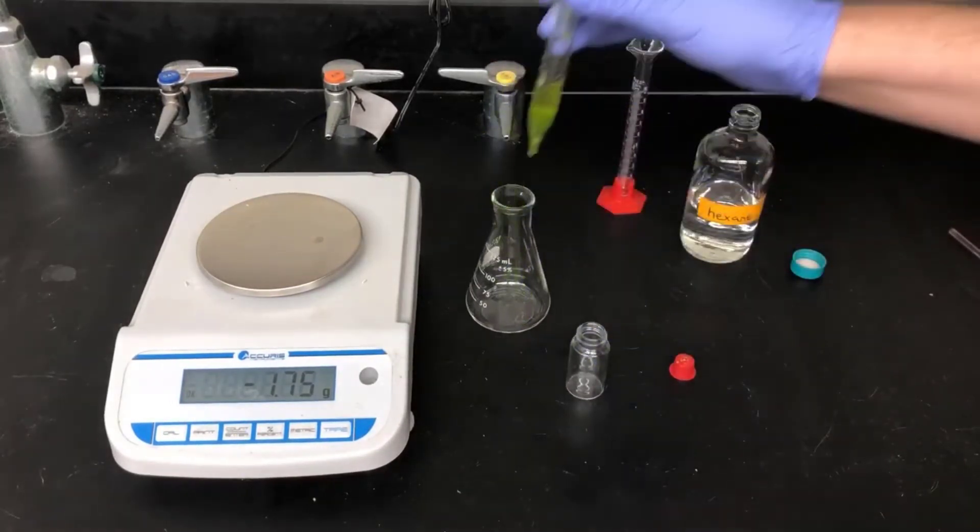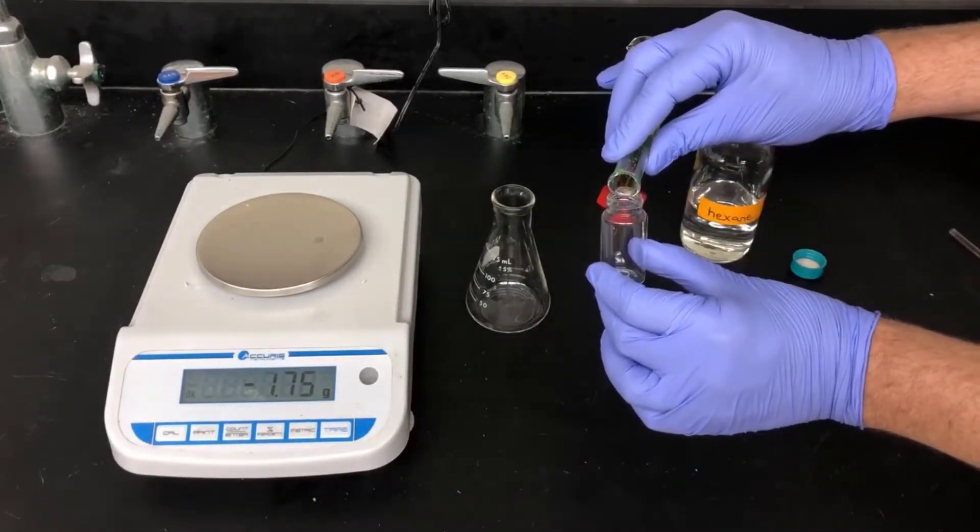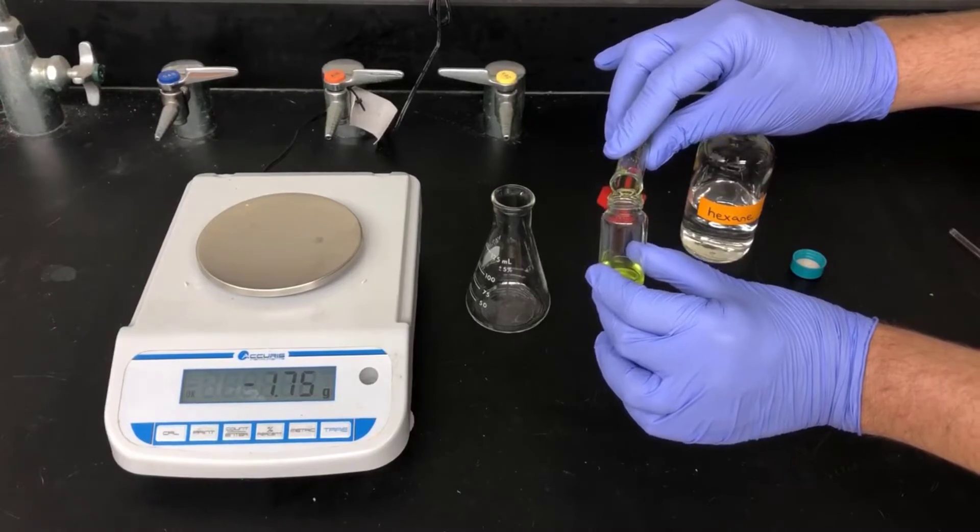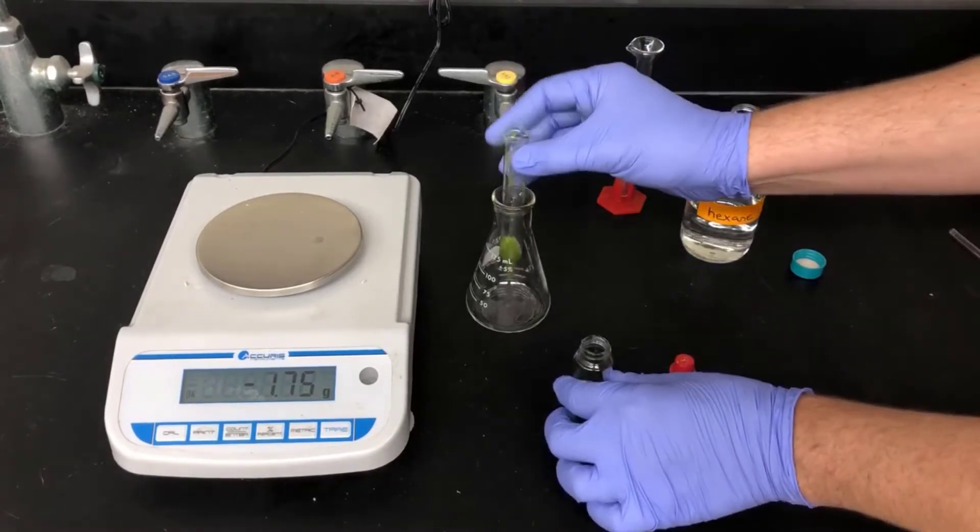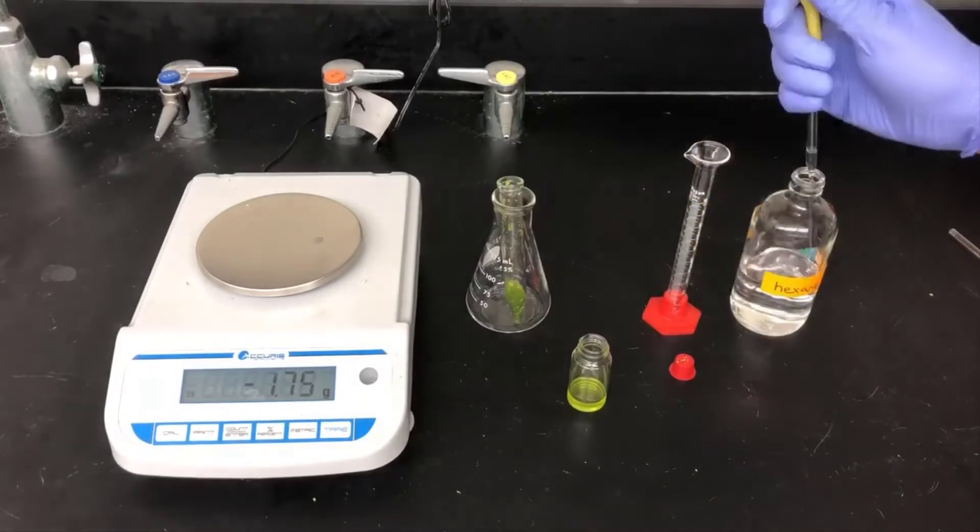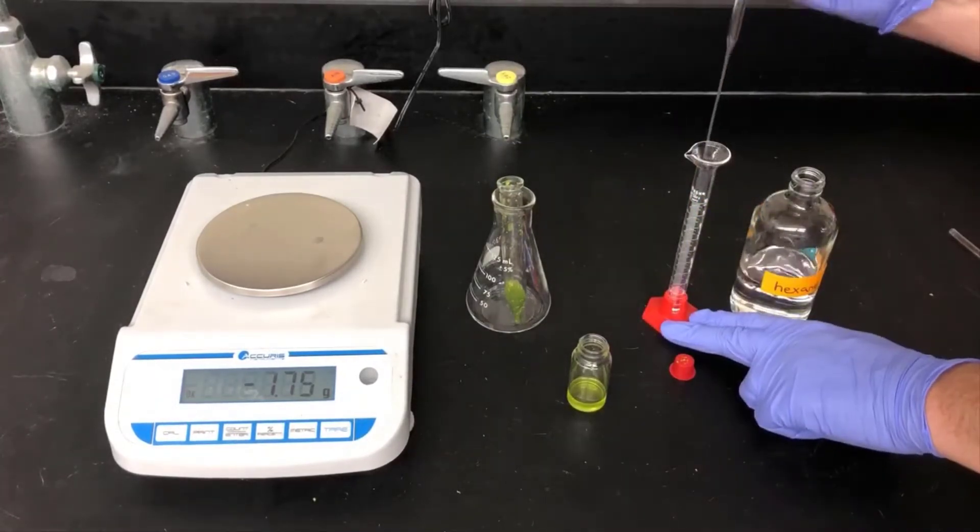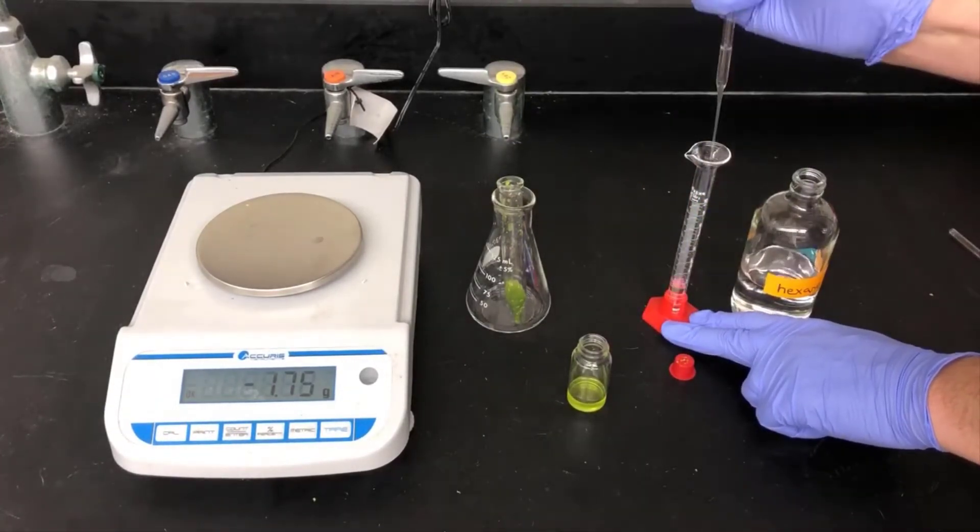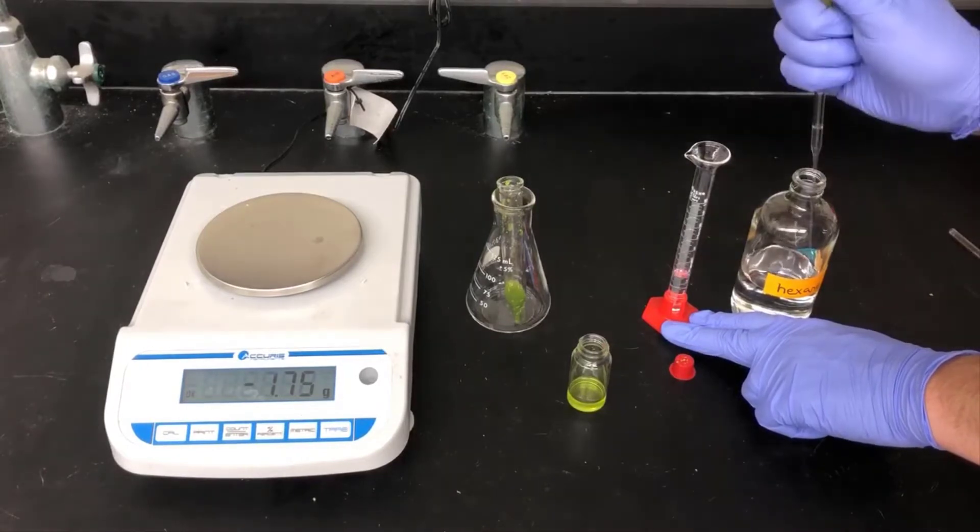I've got a clean dry vial here, which I'm going to decant the solution into. I'm pouring carefully here to leave the citrus peels behind, but get the hexane solution out. Next, I'll measure out another 6 milliliters of hexane and then add that back to the citrus zest. The idea with doing a second extraction is I'll get more of the essential oil.